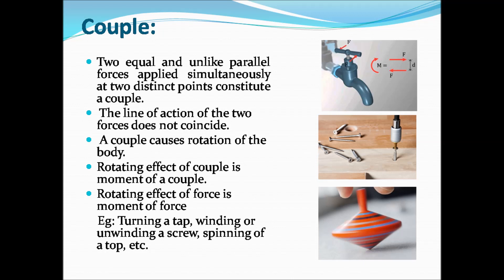A couple consists of two equal and unlike parallel forces applied simultaneously at two distinct points. These forces act in opposite directions and their lines of action do not coincide. A couple causes rotation of the body — this rotating effect is called the moment of couple. Examples include turning a tap, winding or unwinding a screw, and spinning a top.